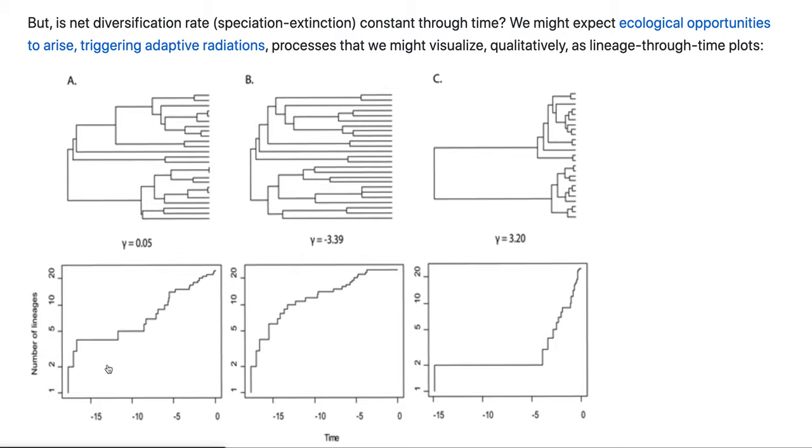So here kind of a bulge, here less so. And then panel C shows the opposite. So here we have a whole lot of nodes near the present. And actually that can come about in multiple ways. So one of them might be that near the present, all of a sudden things are awesome, and so everybody's diversifying. Lots of lineages accumulate here.